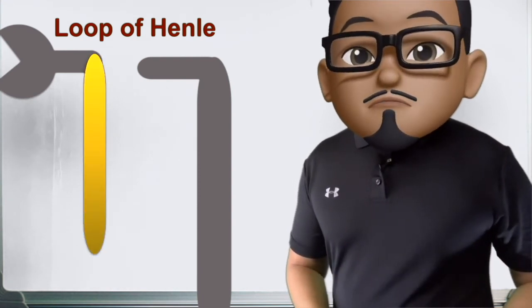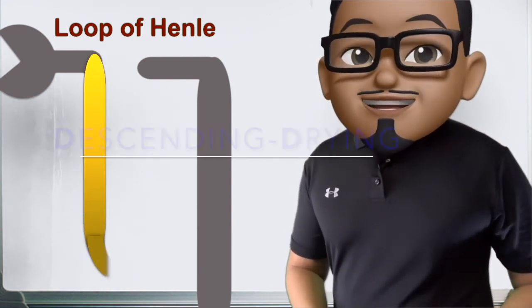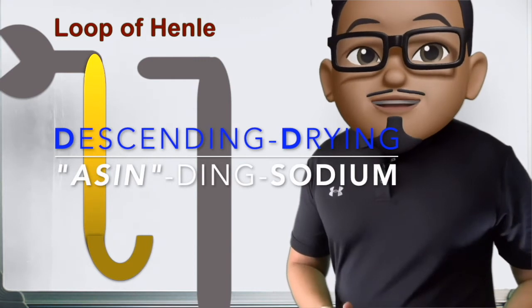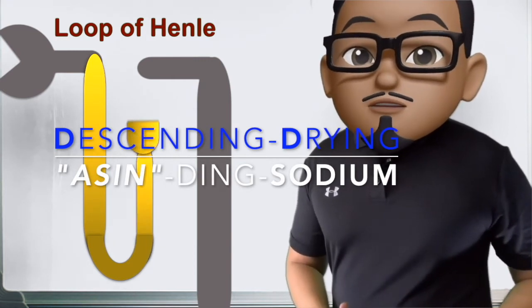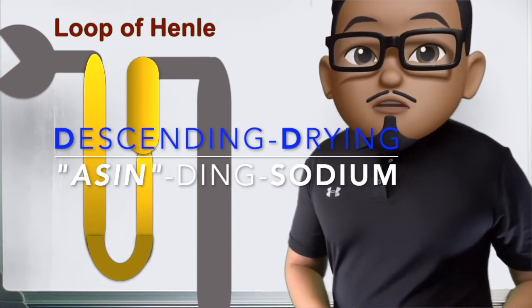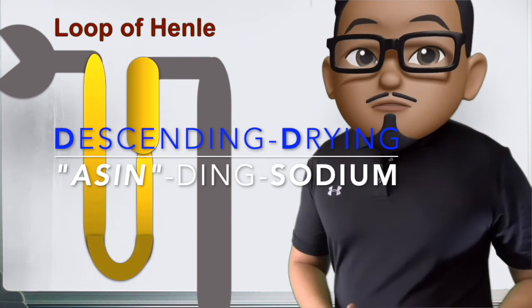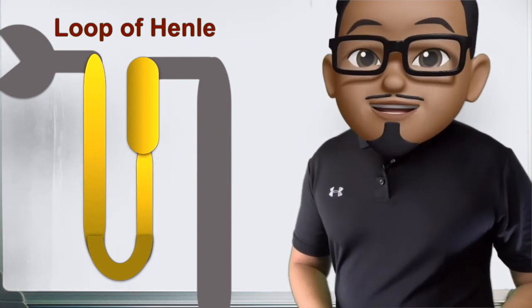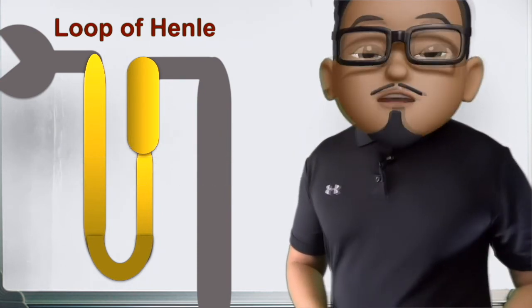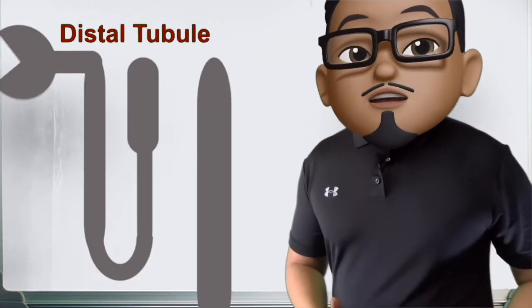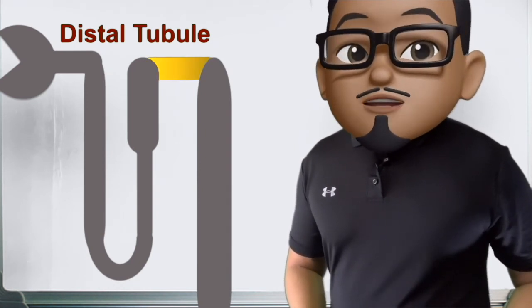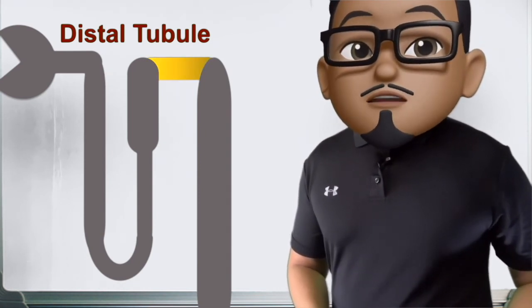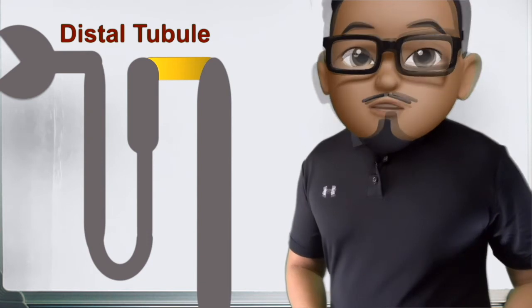The descending limb is the drying limb — descending, drying — while the ascending limb is impermeable to water but permeable to sodium and salt, or what we call ascending-asin. In the distal tubule, PTH leads to increased calcium-sodium exchange at the basolateral membrane, which actively reabsorbs calcium.